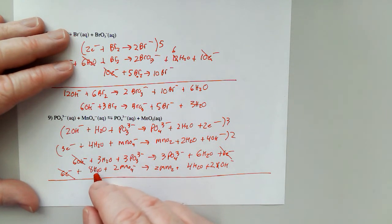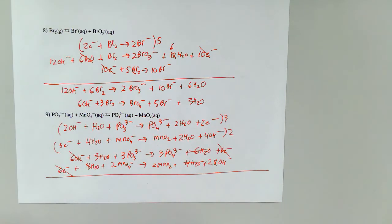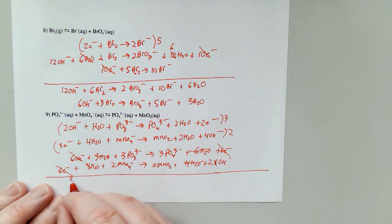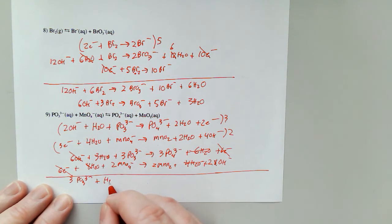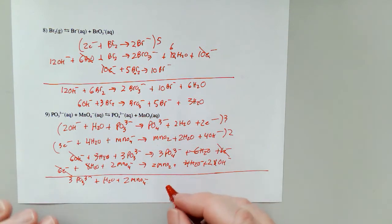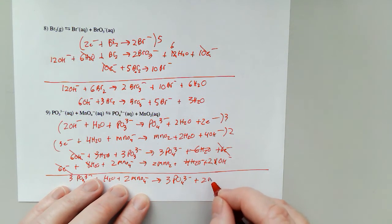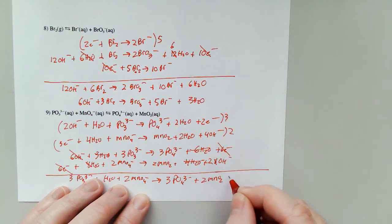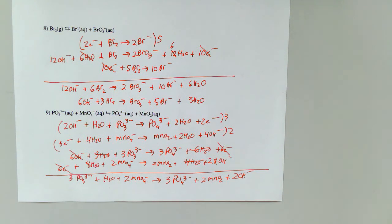Three and eight is eleven, and six and four is ten, so those disappear leaving me with just one. So I have three PO₃³⁻ plus two MnO₄⁻ yielding three PO₄³⁻ plus two MnO₂ and two hydroxides. That is number nine. Thanks for tuning in — this is Morgan signing off.